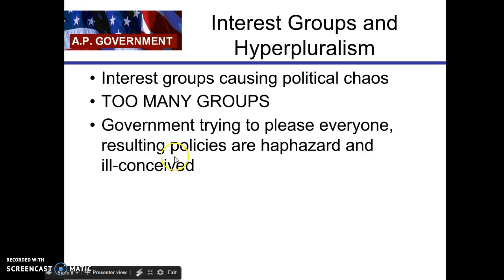The last theory is hyperpluralism. Hyperpluralism says yes, there are many interest groups, but there are way too many, so nothing gets done — it leads to gridlock. In a hyperpluralist theory, the government is trying to please everyone, trying to satisfy all the different interest groups. However, with too many groups, the policies that are developed are disorganized, haphazard, and ill-conceived. They're just bad laws, and that leads to gridlock — nothing gets done.